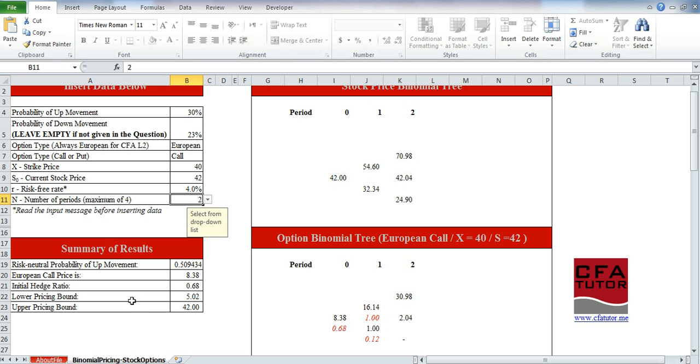For more information about the lower pricing bound and upper pricing bound, click on the link related to the option pricing boundaries, which is the material related to level 1. But it basically shows you over here that the price that we get is within the lower and upper pricing bound.